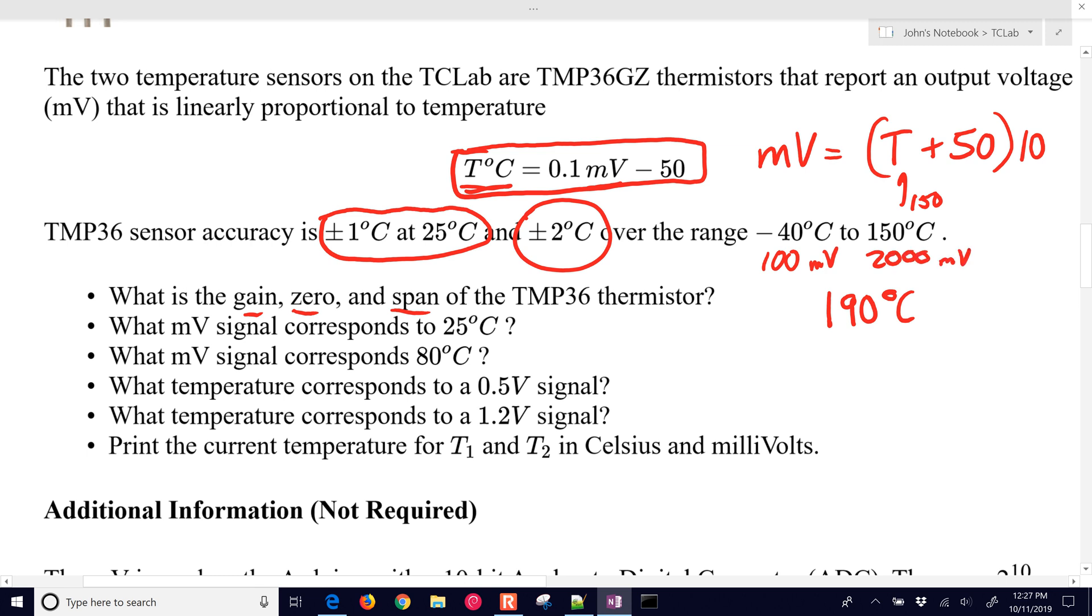To come up with our gain, I'll do Km, and that is going to be the 2,000 millivolts minus 100 millivolts divided by 150 degrees C minus negative 40 degrees C. And so, that is going to be 10, and don't forget the units on here, millivolts per degree C. There is our gain.